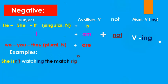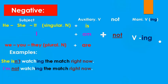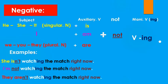Examples: 'She isn't watching the match right now.' 'I am not watching the match right now.' Now, focus: 'is not' contracts to 'isn't', and 'are not' contracts to 'aren't'. But with 'am', we cannot contract it — it stays as 'I am not', we cannot say 'amn't'.